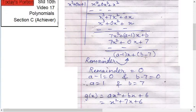Now this is the remainder but it's exactly divisible, so remainder is 0. So a minus 1 equals to 0 and b minus 7 equals to 0. Therefore a equals to 1 and b equals to 7.